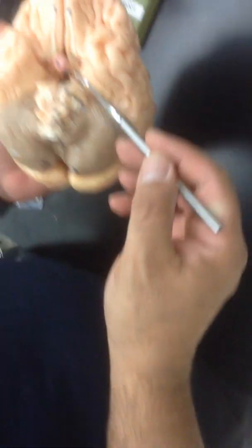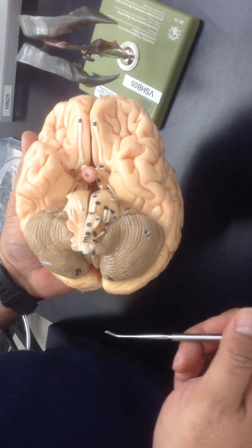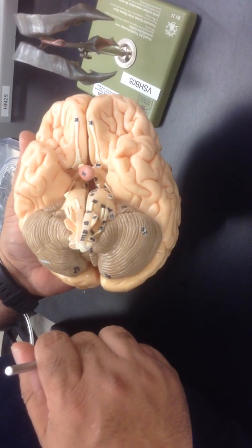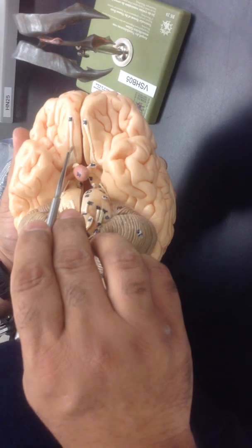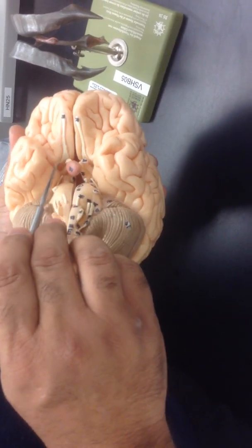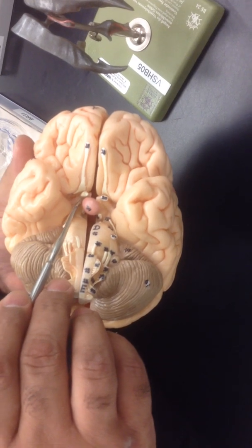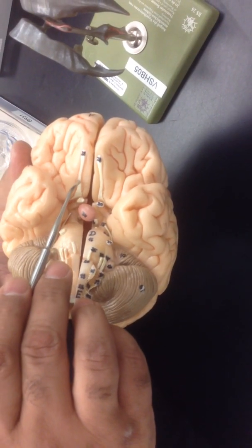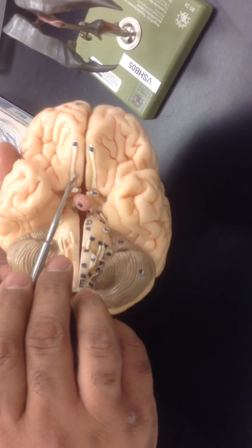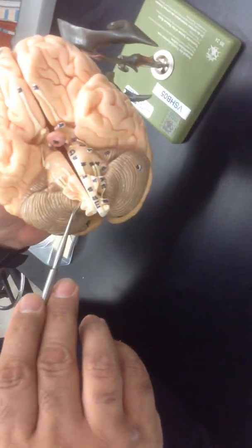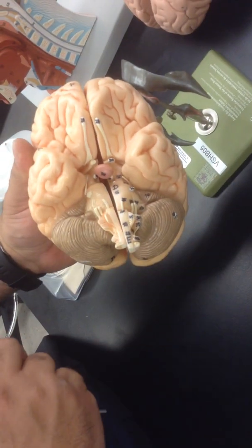And of course, this little structure here, this is known as the pituitary gland, which fits right into the sella turcica. These two cranial nerves, cranial nerve number one, which is olfactory, and cranial nerve number two, which is optic, are part of the cerebrum. The rest of the cranial nerves that you can see here are part of the brain stem.